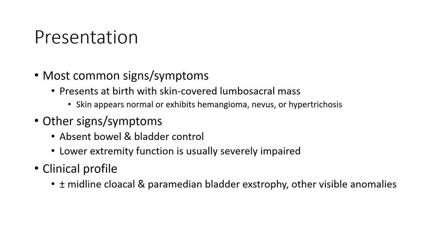Presentation — most common signs and symptoms: present at birth with skin-covered lumbar sacral mass. Skin may appear normal or show capillary hemangioma, nevus, or hypertrichosis. Other signs and symptoms include absent bowel and bladder control, lower extremity function is usually severely impaired. Plus or minus midline cloacal and paramedian bladder exstrophy are the visible anomalies.